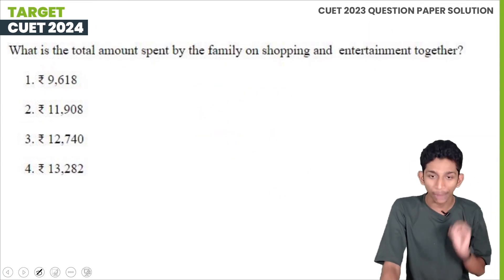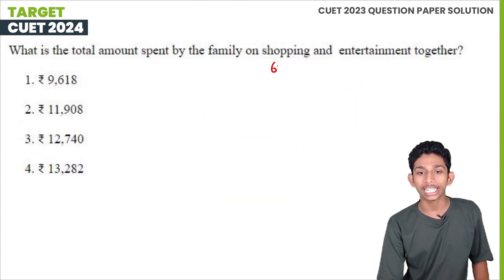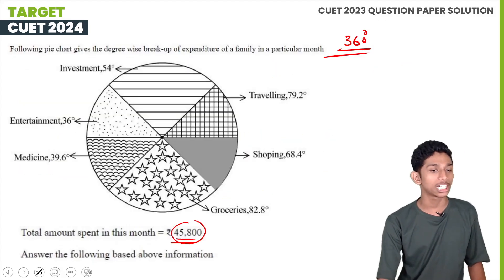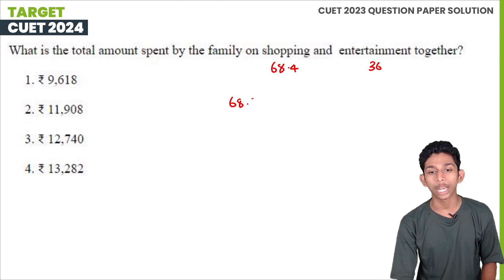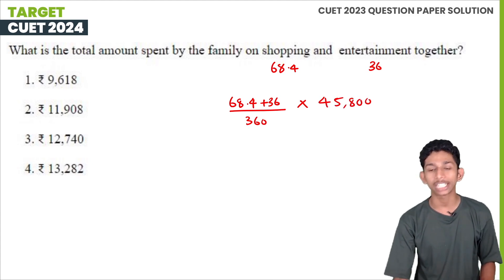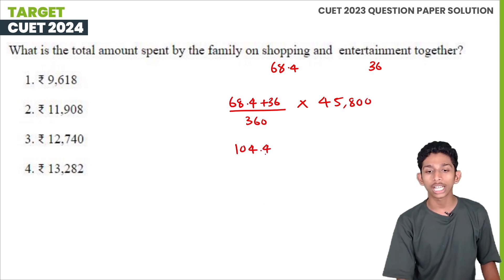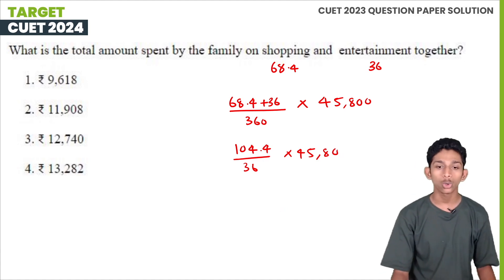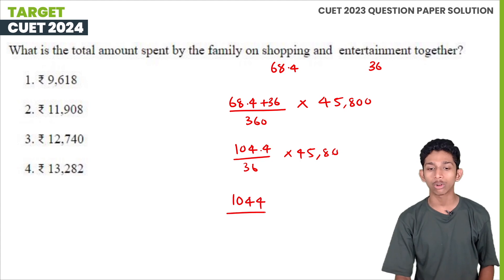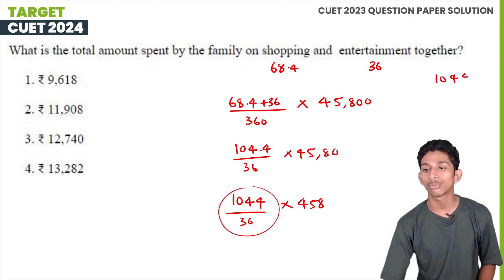What is the total amount spent by the family on shopping and entertainment together? Shopping is 68.4 degrees and entertainment is 36 degrees. Adding them: 68.4 plus 36 equals 104.4. Then 104.4 divided by 360 multiplied by 45,800. We simplify 1044 divided by 36, which gives us approximately 29.